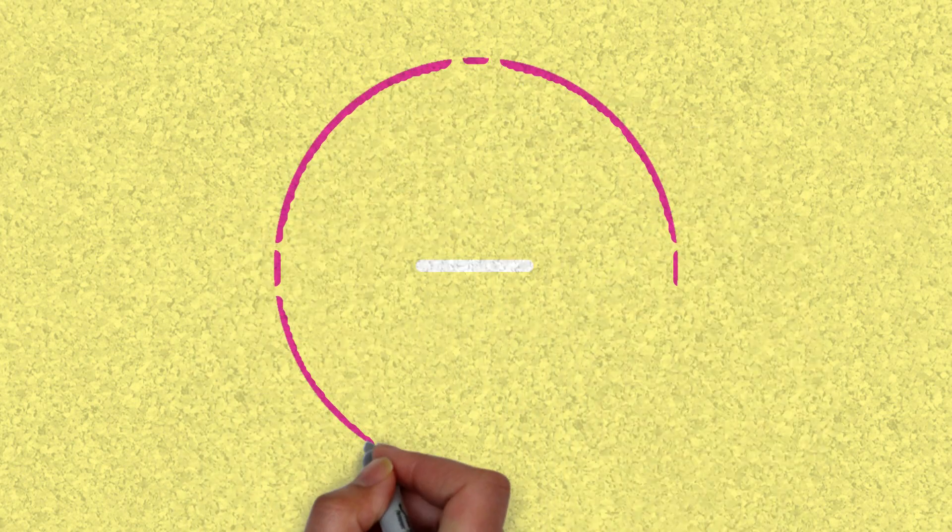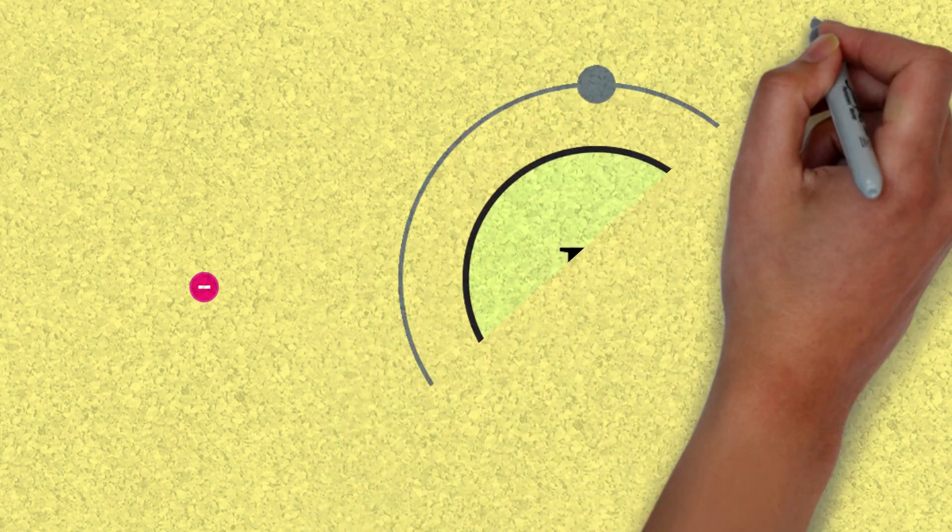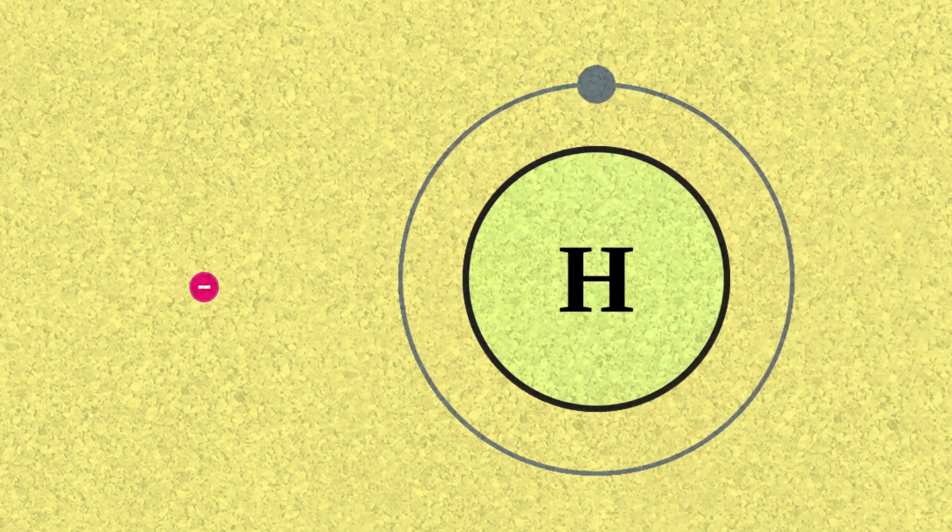An electron is roughly 10,000 times smaller than a hydrogen atom, which is the smallest atom. It's already impossible to see the atom with the naked eye, so how do we know that electrons exist?